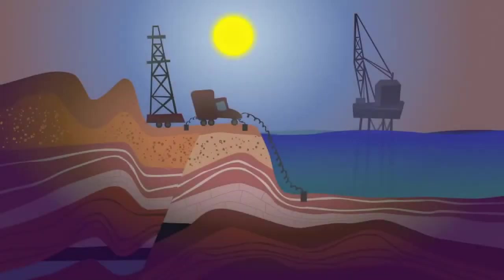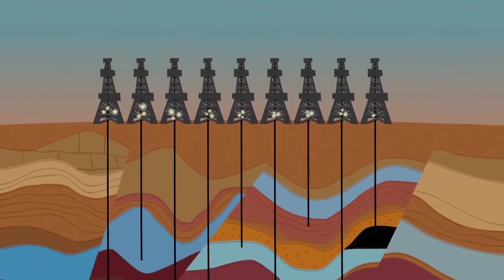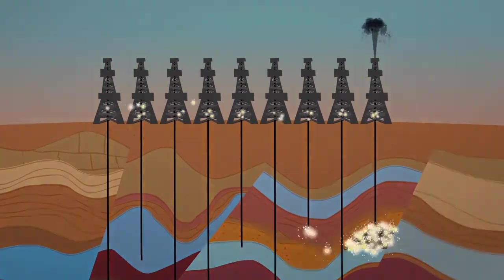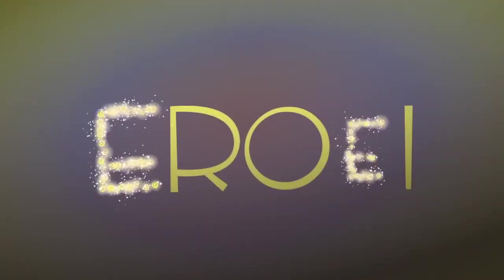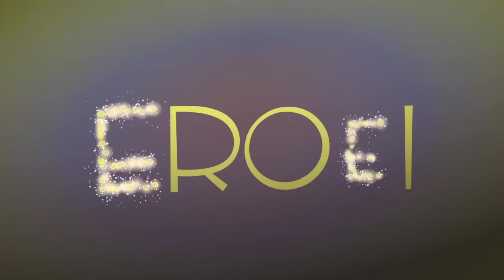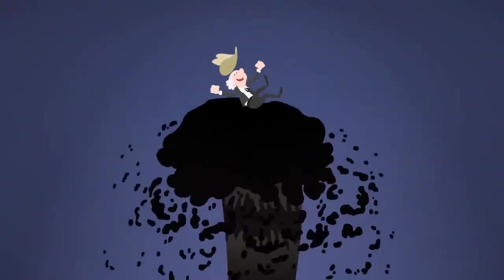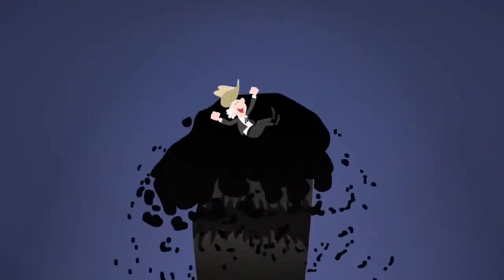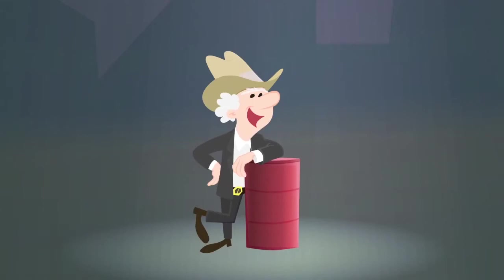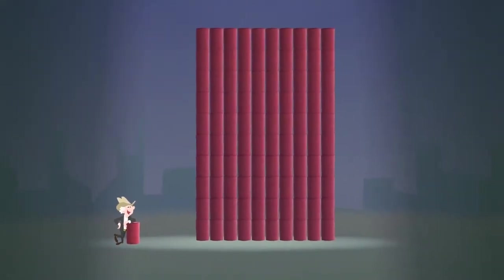To acquire energy, you have to use energy. The trick is to use smaller amounts to find and extract larger amounts. This is called EROEI, energy return on energy invested. Conventional oil is a good example. The easy to extract high quality crude was pumped first. Oil men spent the energy equivalent of one barrel of oil to find and extract 100. The EROEI of oil was 100.